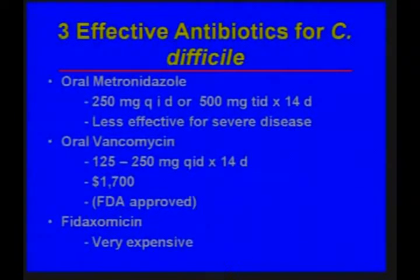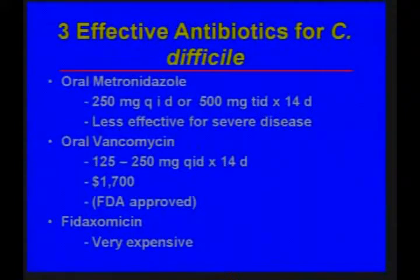Oral vancomycin is used for people who cannot tolerate metronidazole or do not get better with oral metronidazole, and the dose of 125 or 250 milligrams four times a day is about the same. It was, until a few weeks ago, much more expensive, but has just lost patent and become generic, so the price should come down significantly.